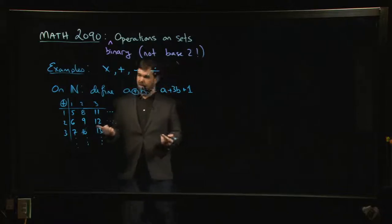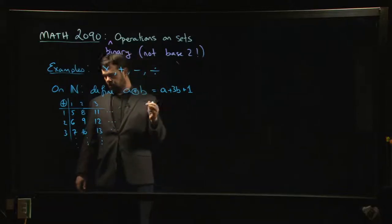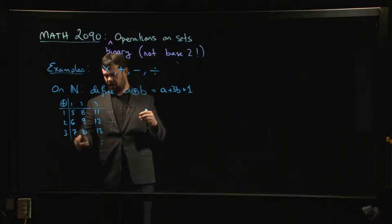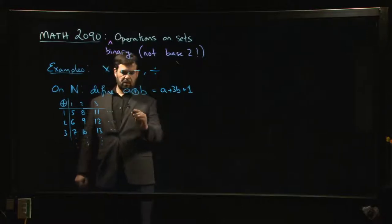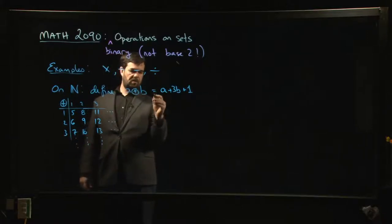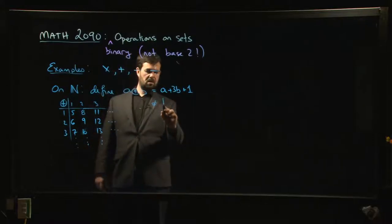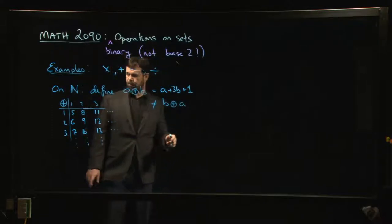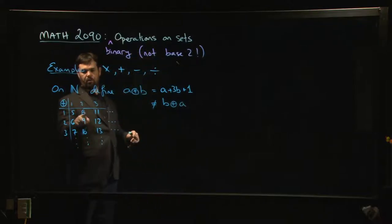One of the things that you might notice with this one—some of the properties that you're used to having for things like addition, multiplication—you might notice that, for example, a ⊕ b is not the same thing as doing b ⊕ a, right? 1 ⊕ 2 gives me 8; 2 ⊕ 1 gives me 6. You get different answers.